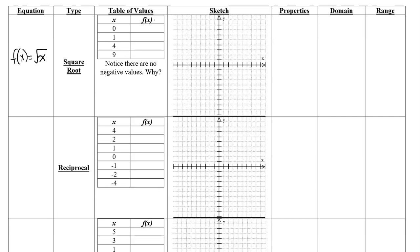When x is 0, the square root of 0 gives me 0. When x is 1, the square root of 1 gives me 1. The next value isn't 2 because the square root of 2 isn't a whole number — we use the next perfect square: the square root of 4 is 2, and the square root of 9 is 3. So on the grid: 0 is 0, 1 is 1, then 4 and 2, and 9 and 3.